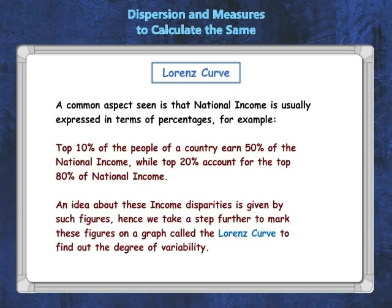A common aspect seen is that national income is usually expressed in terms of percentages. For example, the top 10% of the people of a country earn 50% of the national income, while the top 20% account for the top 80% of national income. An idea about these income disparities is given by such figures.